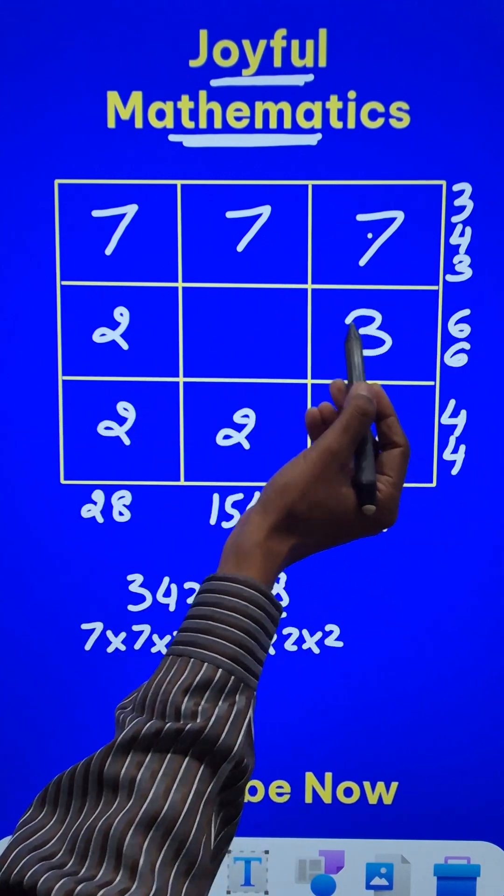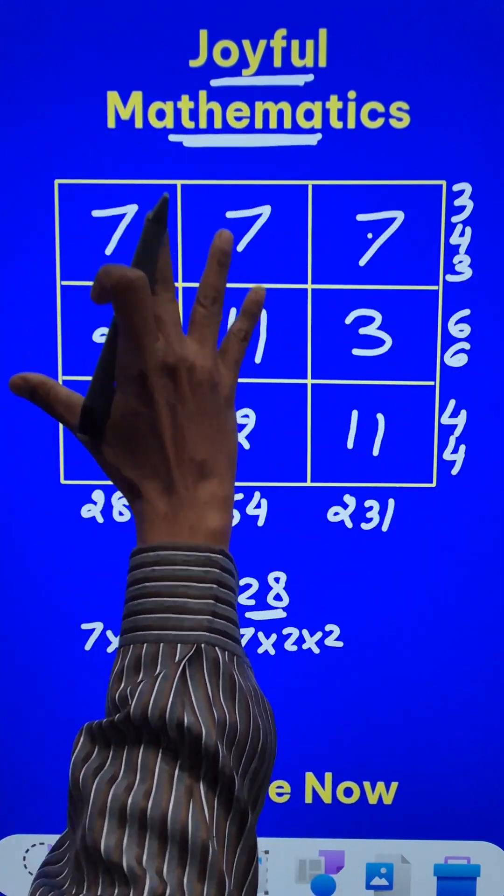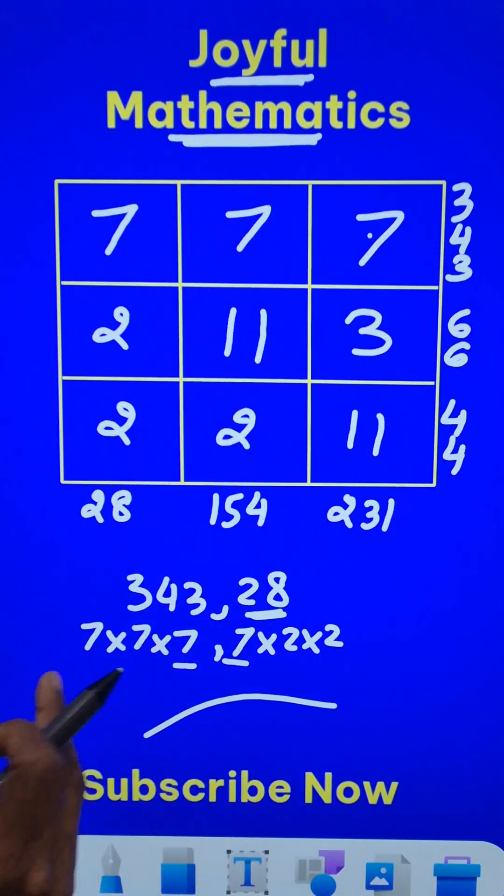And 66 means 3 twos are 6. 66 divided by 6 is 11 here. And that completes our prime factor matrix. Isn't that an amazing game?